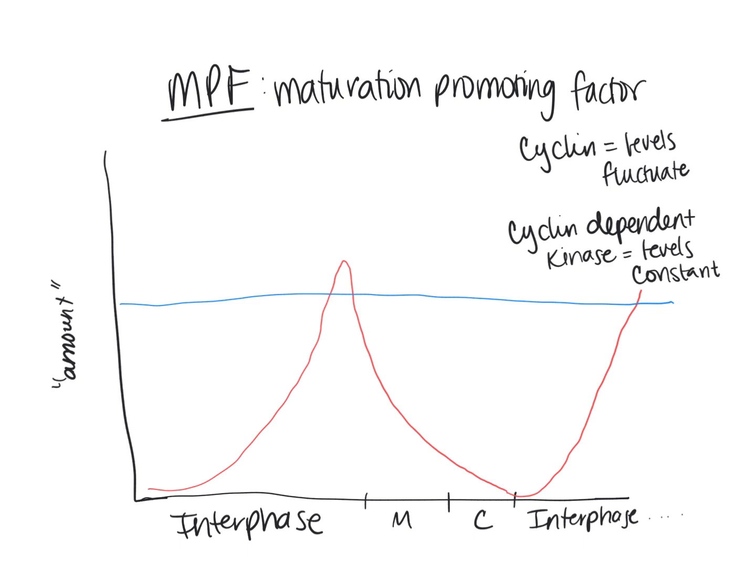Since the levels of MPF are dependent on both cyclin and CDK, we would see a pattern similar to cyclin. Right at the end of G2 — at the end of interphase, just before the M phase — we would see the highest spike in the maturation promoting factor.